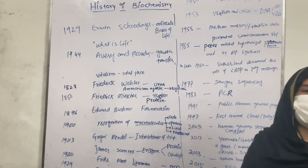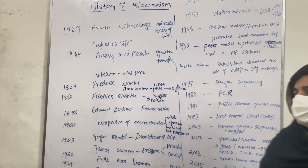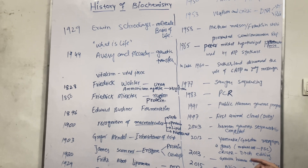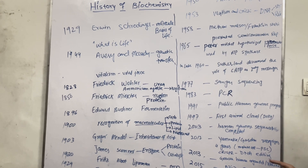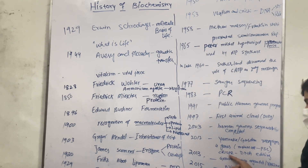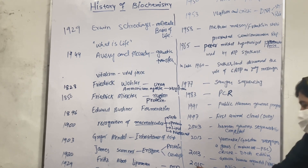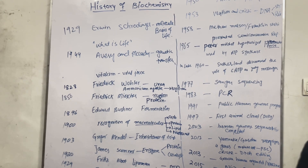In 2003, the human genome sequence was fully completed. In 2012, Yamanaka and Gurdon recognized four genes involved in the conversion of mature somatic cells into pluripotent stem cells. In 2013, CRISPR was developed and much more widely used for the editing of nucleotide bases of DNA.